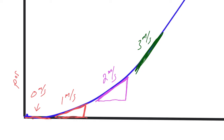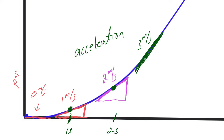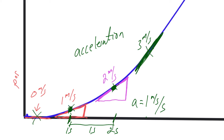With this curvature you can clearly see there is an acceleration — we're speeding up, going from zero to one to two to three meters per second. If we calculate the acceleration: at one point the slope is one meter per second, and at another it's two meters per second, with a time interval of one second between them. That gives an acceleration of one meter per second every second.